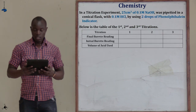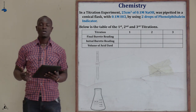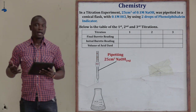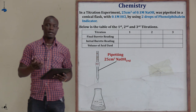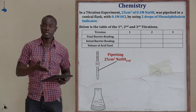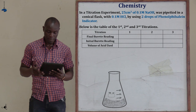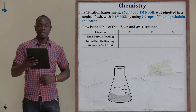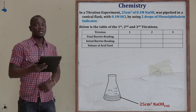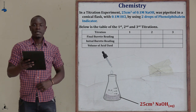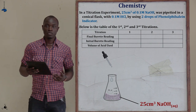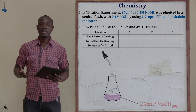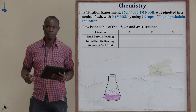The first question is asking: in a titration experiment, 25 cm³ of 0.1 molar sodium hydroxide was pipetted into a conical flask. After that, 0.1 molar hydrochloric acid was titrated using the solution in the conical flask, whereby the phenolphthalein indicator was used to determine the end point of the reaction. Only two drops of the phenolphthalein indicator were used in this process.